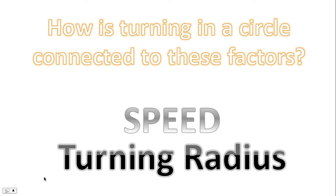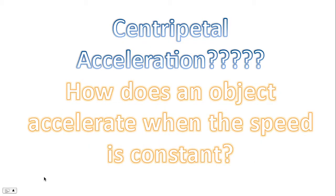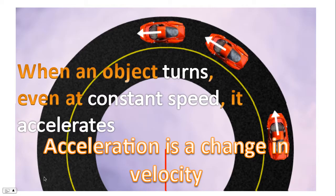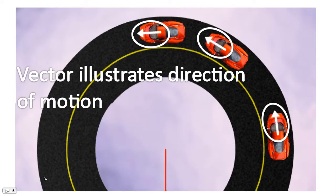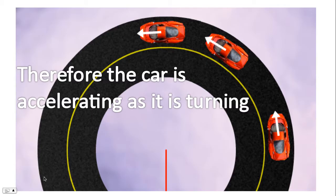So how is turning a circle connected to these factors — specifically speed and turning radius? They're connected through the physics that we call centripetal acceleration. You may be asking: how does an object accelerate if the speed is constant? When an object turns, even at constant speed, it accelerates — because acceleration is not simply a change in speed, it's a change in velocity. Acceleration also occurs when a change of direction happens. Notice the velocity vector is changing direction; therefore the car must be accelerating as it's turning, since its direction is changing.